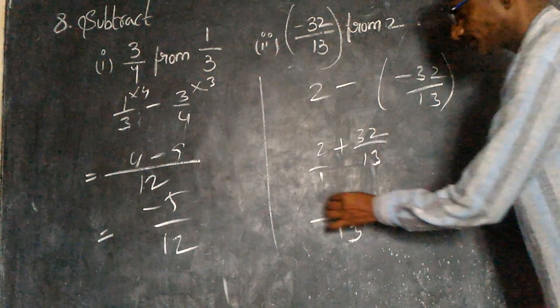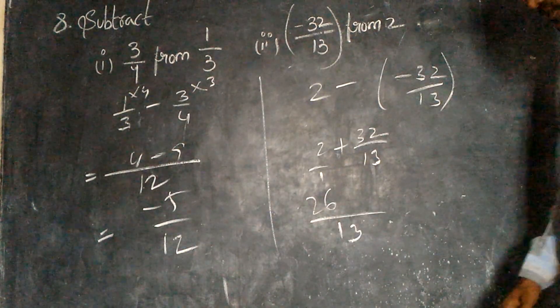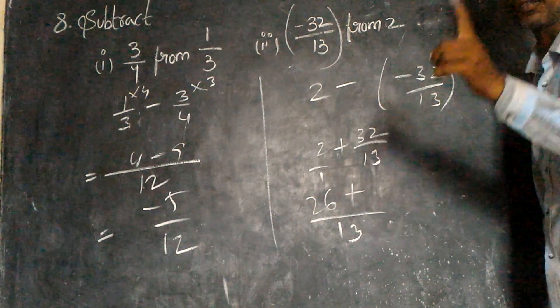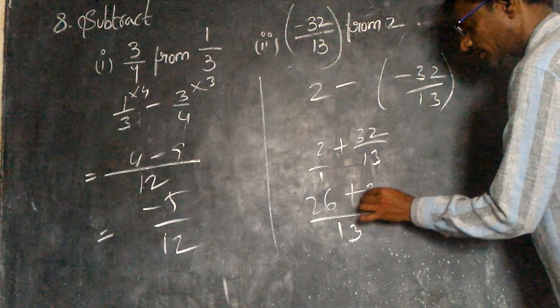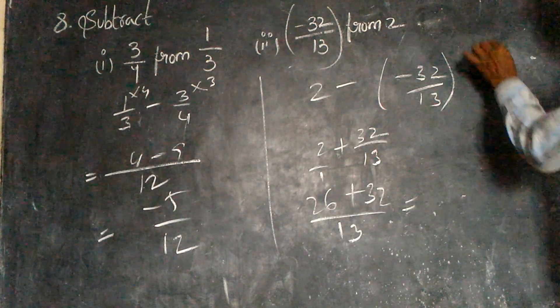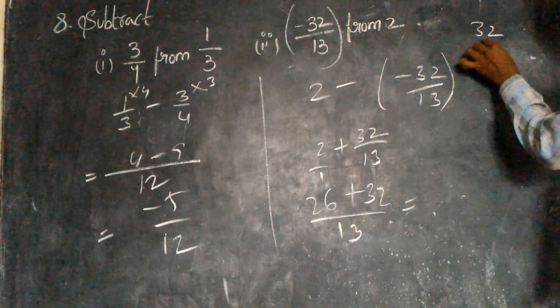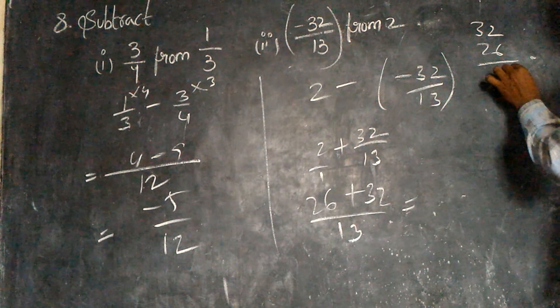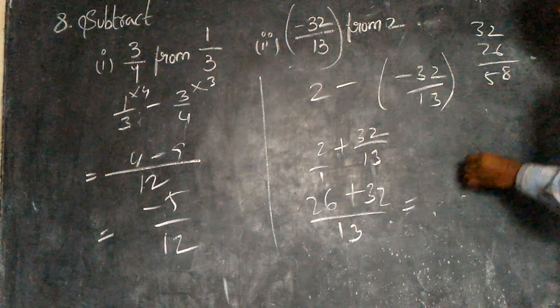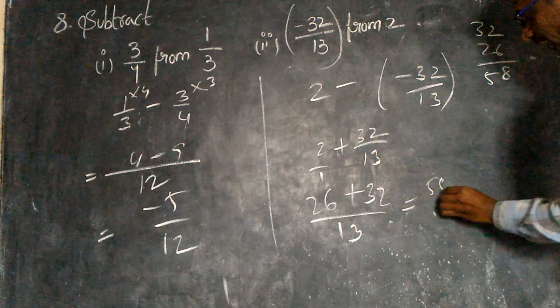13. 13 twos are 26. 13 in 13 one time. How many? 32. So total is 32. Total is 32, total is 32. Eight, five, 58. So 58/13.